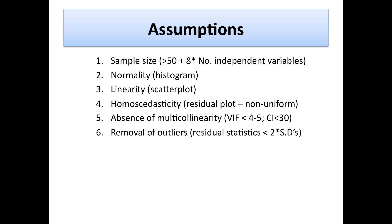Sixth, the removal of outliers is something that's very important. This is at the subjectivity of the researchers themselves, but my preference is to look for residual statistics that are less than two standard deviations away. Anything greater than that signifies the possibility of being removed from the analysis. The idea essentially is that outliers can deflate our ability to make predictions about our independent variables and their relationships with our dependent variables. So removing outliers makes a better fitting model, but we want to be careful that we don't remove cases of data in great quantities.